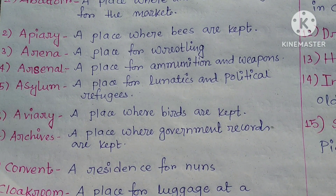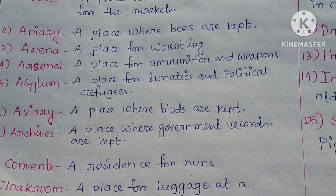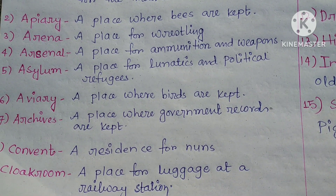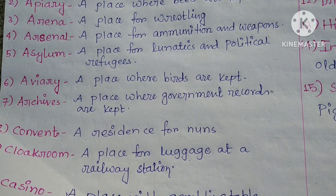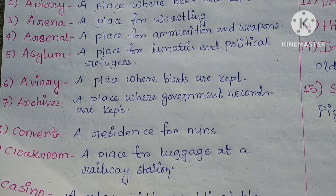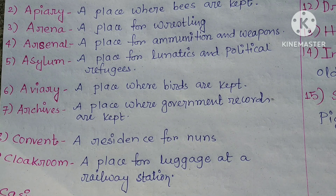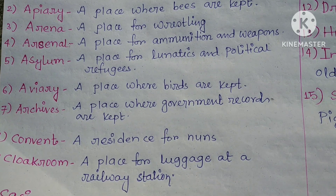Convent — a residence for nuns. Cloak room — a place for luggage at a railway station. The term cloak room is also used in examination halls to refer to the place used to keep the bags or water bottles of students.